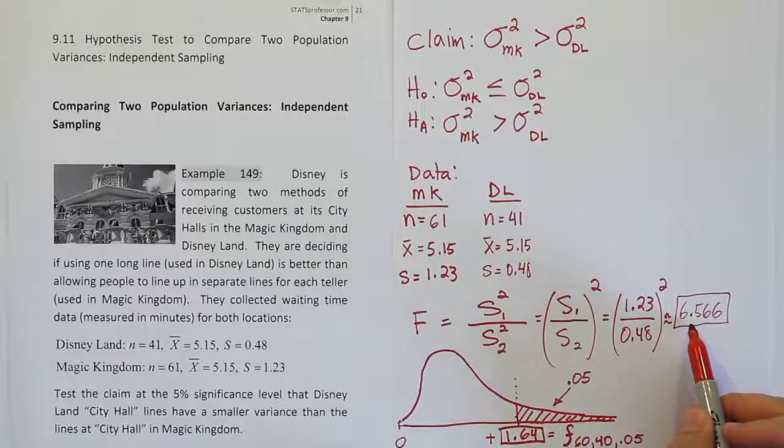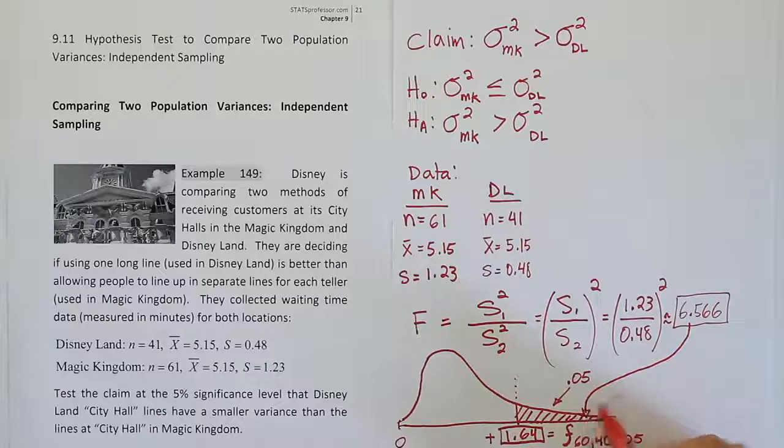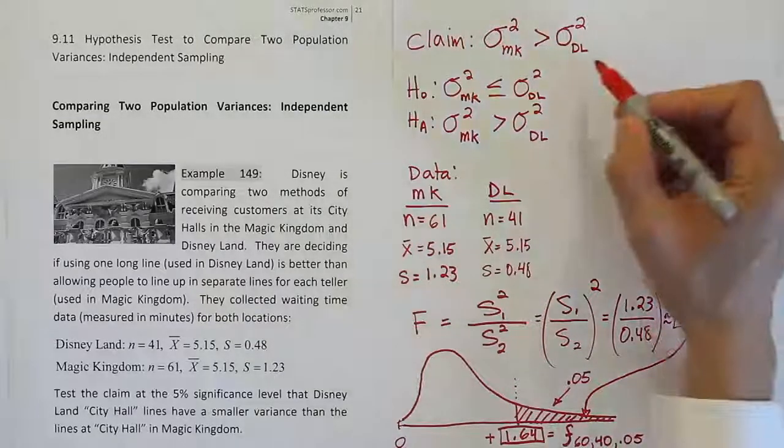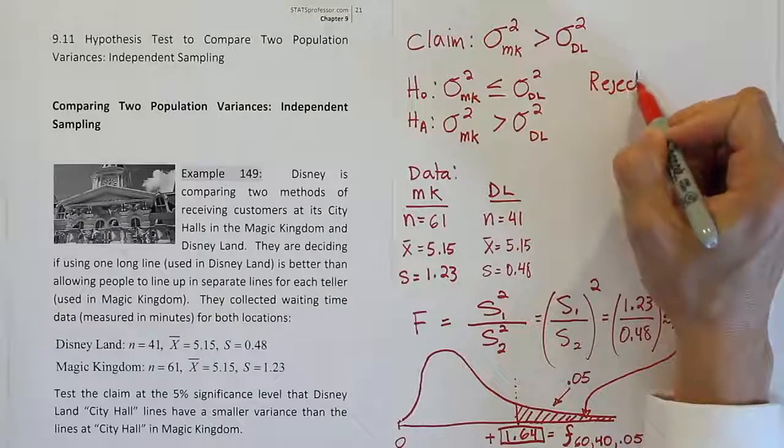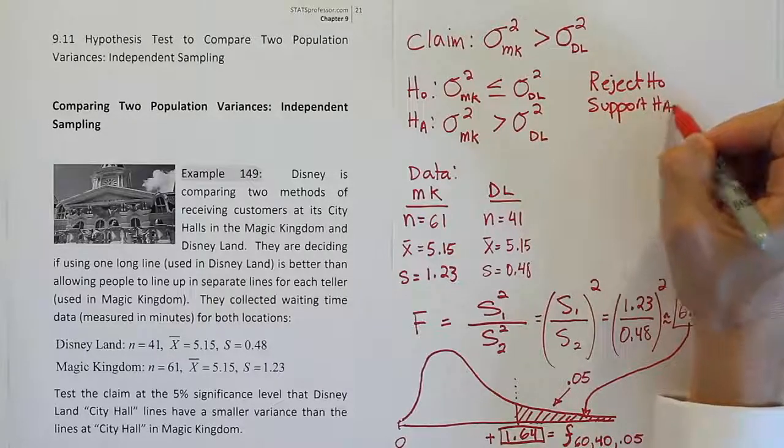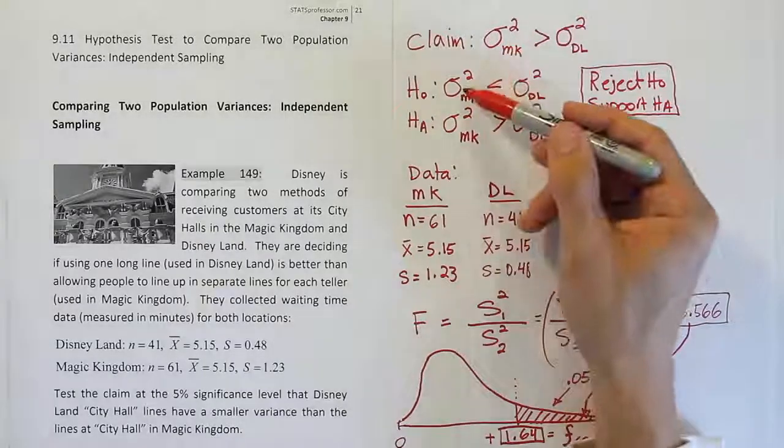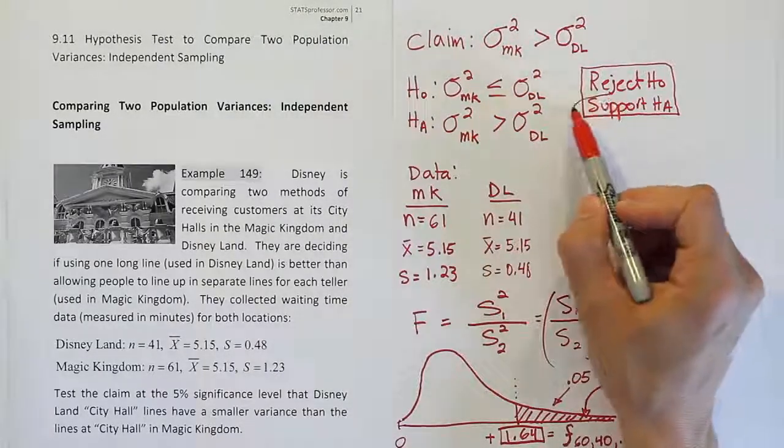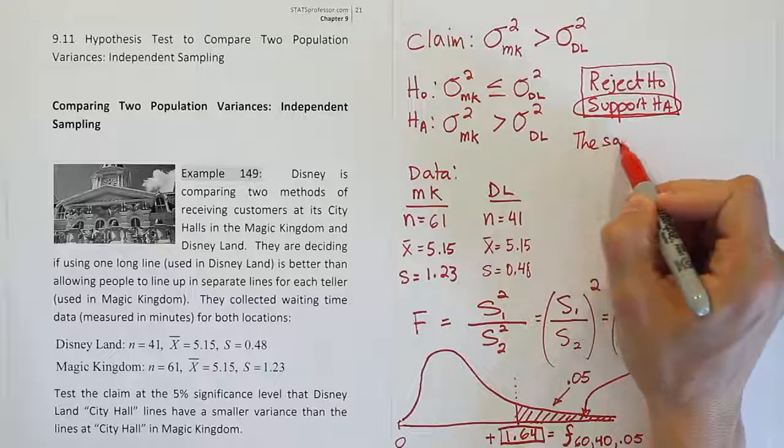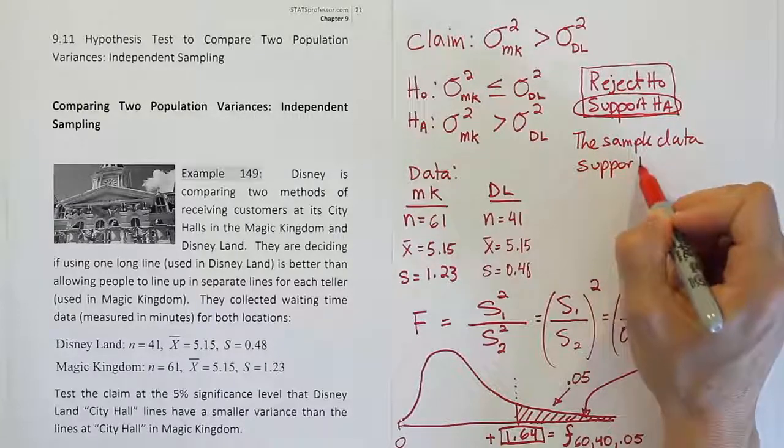We found the answer 1.64 from our table. Now we compare our test stat to the critical value. 6.5 is much greater than 1.64, so it lands in the tail. That means we reject the null hypothesis. So we say reject H₀ and therefore support Hₐ. Now that we've come to that initial conclusion, we ask ourselves, is the claim H₀ or Hₐ? In this particular problem, it is Hₐ. So the sample data supports the claim.